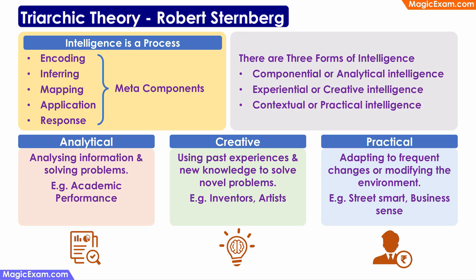Next, we will look at Robert Sternberg's Triarchic Theory. It is called Triarchic Theory because he says there are three forms of intelligence: Componential or Analytical Intelligence, Experiential or Creative Intelligence, and Contextual or Practical Intelligence.